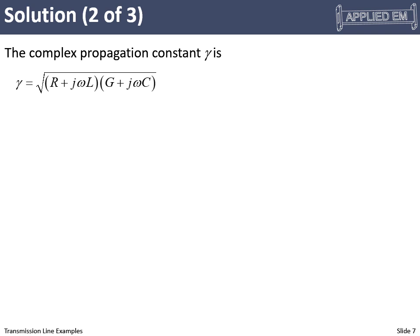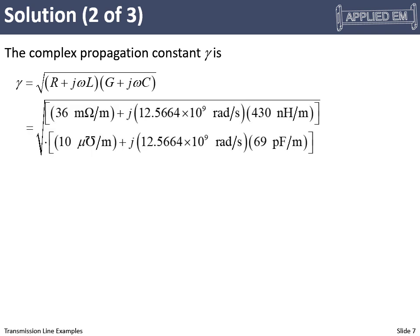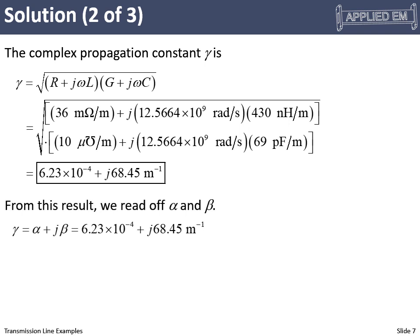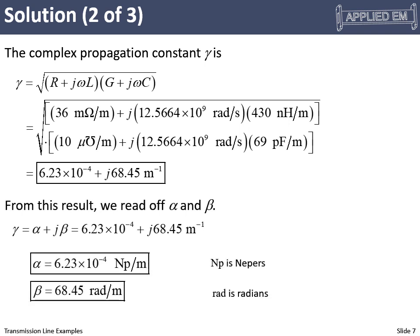The next thing is our complex propagation constant. We plug in our values for R, L, G, C, and omega. Out comes 6.2 times 10 to the minus 4 plus j 68 inverse meters. And from there we can read our attenuation coefficient and our phase constant immediately off of gamma. Let's go ahead and just read those off. Our attenuation coefficient is 6.2 times 10 to the minus 4 nepers per meter. A lot of times this is just given in inverse meters and that's what I normally do, but I put it here just to show you that sometimes they'll say nepers per meter. Nepers is kind of like radians, it's not really a unit. And then we have our phase constant, 68 radians per second. So really we got alpha and beta automatically. That fell out of the complex propagation constant. And this attenuation coefficient is quite small.